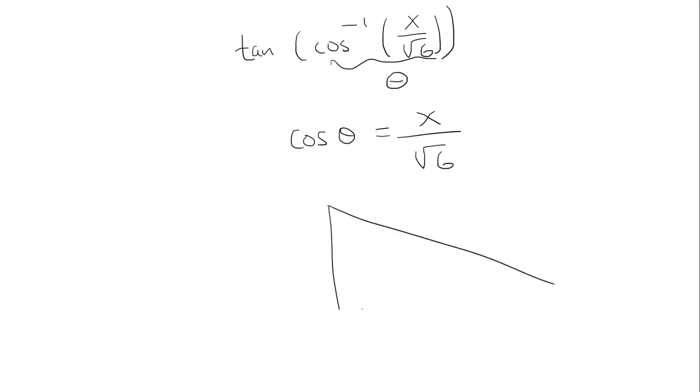We have tangent of cosine inverse of x over root 6. Think of this as an angle, so cosine of this angle has to be x over root 6. So in order to solve this we have to draw a right triangle.